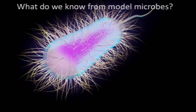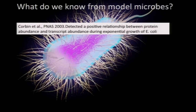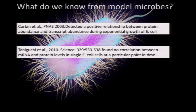What do we know from model microorganisms? This is an E. coli cell, and a lot of work has been done on systems biology of single organisms. A reference from Corbin in PNAS in 2003 detected a positive relationship between protein abundance and transcript abundance during exponential growth of E. coli — a nice confirmation that the information you get from RNA and protein is very consistent. However, at the single cell level, a 2010 reference from Taniguchi found no correlation between messenger RNA and protein levels in single E. coli cells at a particular point in time. So even with a single organism, we're still really at the beginning of understanding how to use these different kinds of information to understand function.